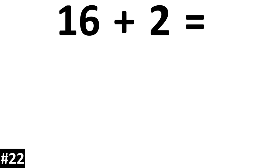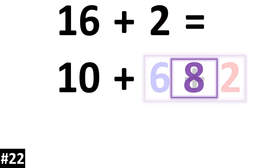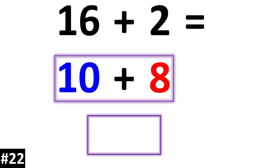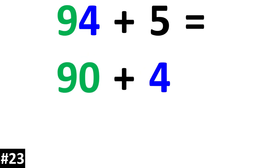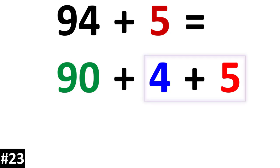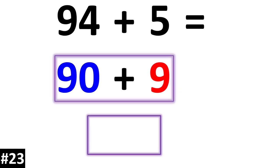How about 16 plus 2? 16 is the same thing as 10 plus 6. We add the other 2, 6 plus 2 is equal to 8. 10 plus 8 is equal to 18. Next, 94 plus 5. 94 is the same thing as 90 plus 4. So if we add the 5, 4 plus 5 is equal to 9. 90 plus 9 is equal to 99.